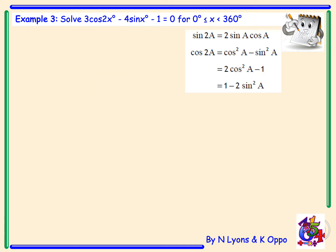Example 3: Solve 3cos2x - 4sinx - 1 = 0 for x ≥ 0° and x < 360°. We have a double angle and a single angle, so we replace cos2x using the double angle formula. To factorize, we need the same trig term throughout — the middle term is -4sinx — so we use cos2x = 1 - 2sin²x to get an expression entirely in terms of sine.